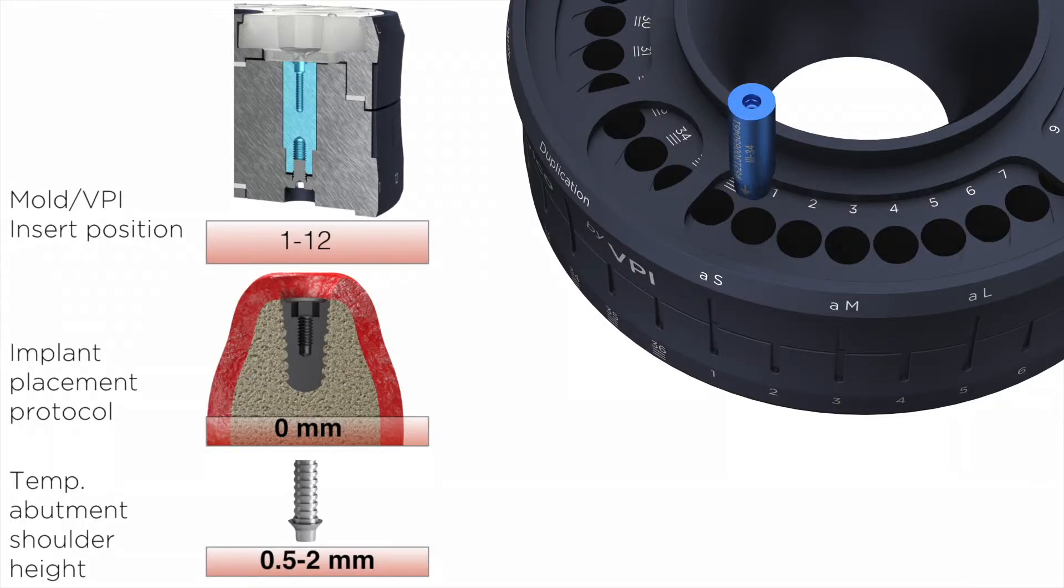Sockets number 1 to 14 receive the VPI prosthetic connection insert flush to their top level. This is particularly useful if your clinical protocol involves crestal implant placement.